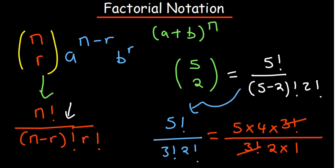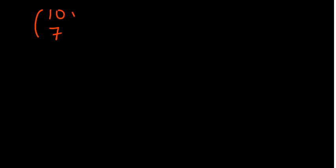The three factorials cancel out, leaving five times four over two times one. Dividing four by two gives two, so we have five times two, which equals ten. That introduces how to simplify these expressions efficiently — so that if you're given something as large as ten choose seven, you don't have to write out the full ten factorial expansion.